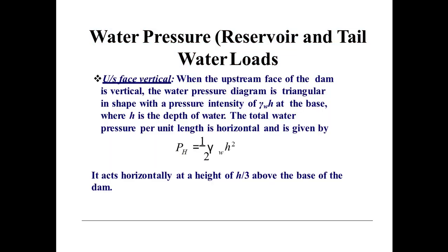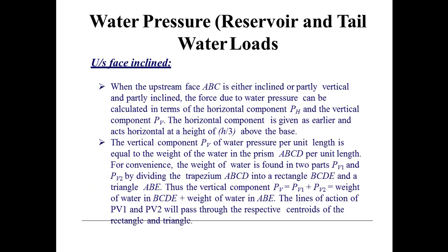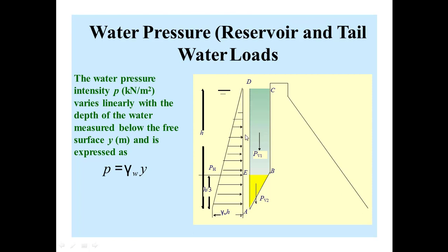This horizontal force pH acts at a height of h/3 above the base of the dam. The centroid of this force is at a height of h/3. If the total height is h, then the distance from the base up to the point of action is h/3, and the force pH will act at this height.